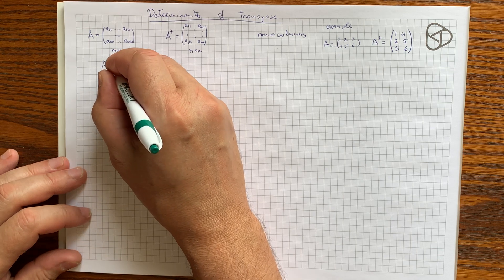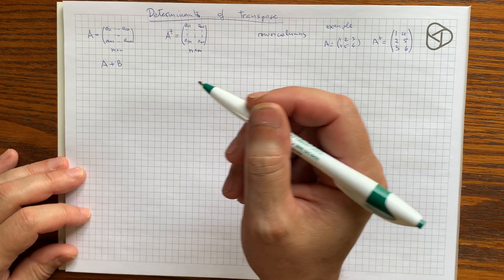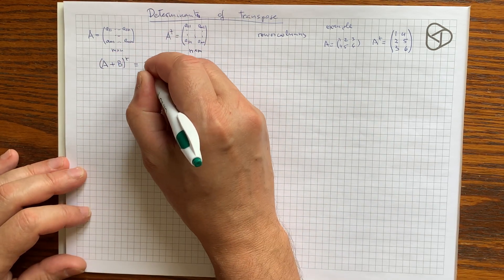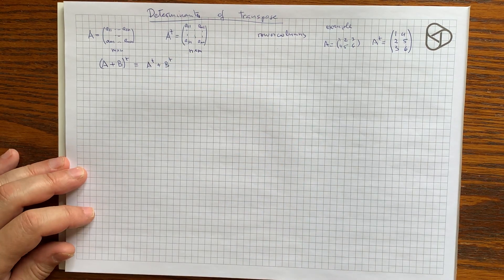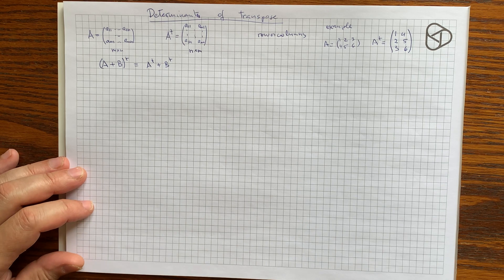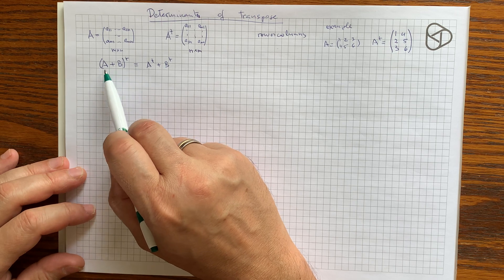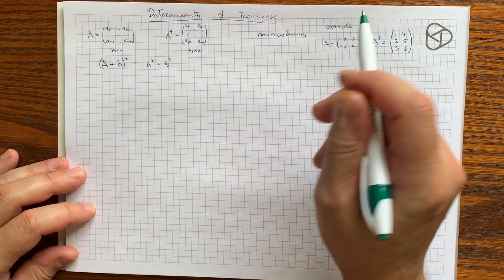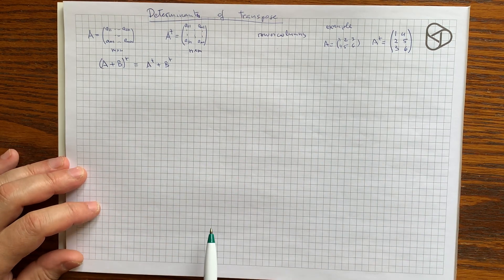The first property is: if we take two matrices of the same size, we can compute their sum, and the transpose of the sum will just be the sum of the transposes. It's easy to see — in the sum, each row is the sum of rows taken from A and B at the same positions, and when we transpose them separately and take the sum, the result is the same.